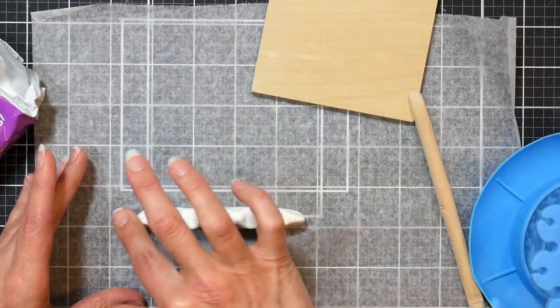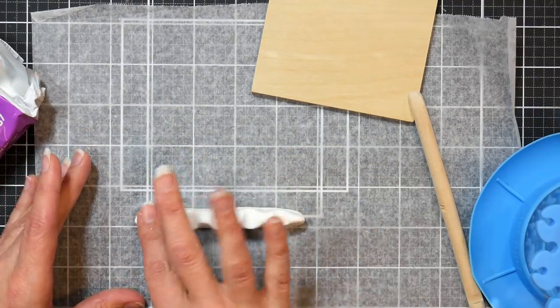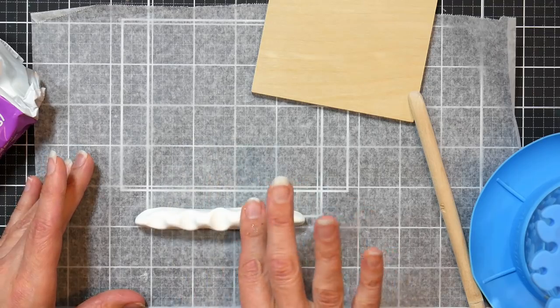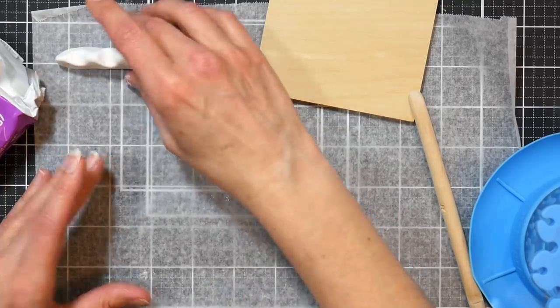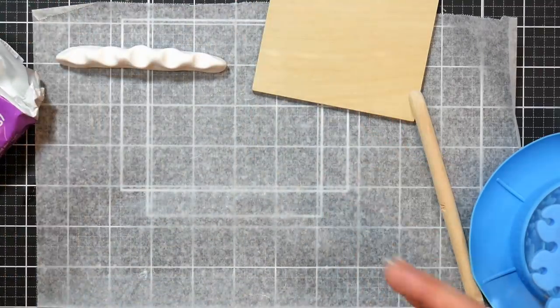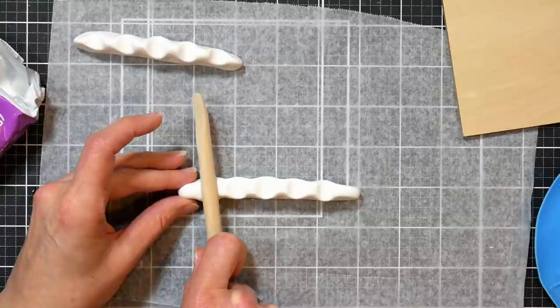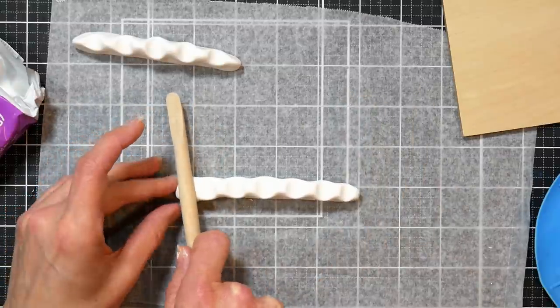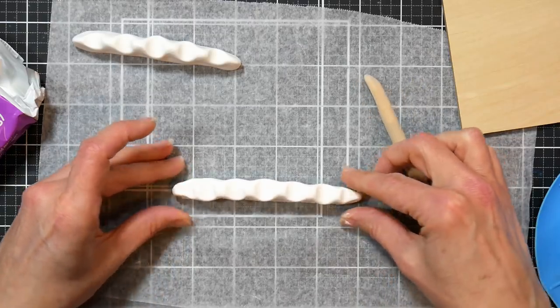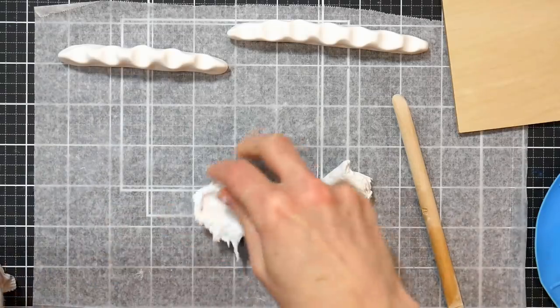This technique would also be really good for chopstick rests. I noticed I got a little bit of cracking as I was pressing the clay. I wanted it to be nice and smooth without fingerprints, so I just used a little bit of water on my fingers to smooth out any cracking or blemishes. This one I did with seven divots to hold seven brushes, because I'm just experimenting.